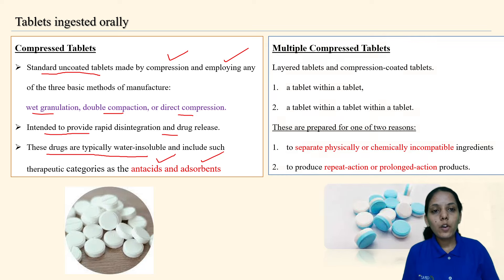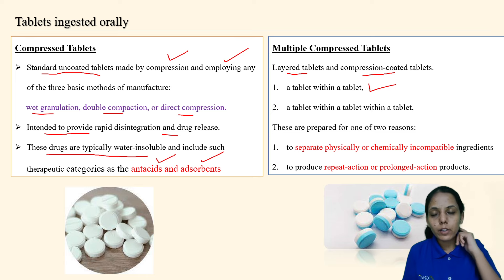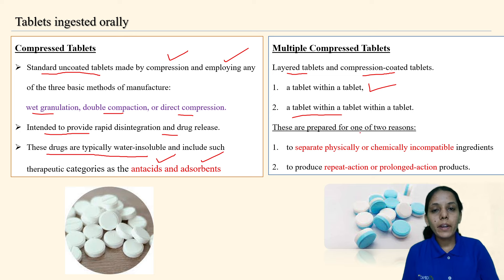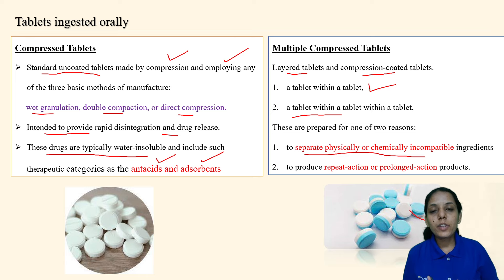Multiple compressed tablets — as the name suggests — are used to separate physically or chemically incompatible ingredients, for example in layered tablets and compression-coated tablets. One tablet may be within another tablet. If ingredients mixed together would produce incompatibility, they can be separated into two different layers. This is the multiple compressed tablet.